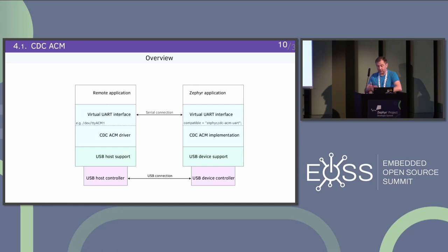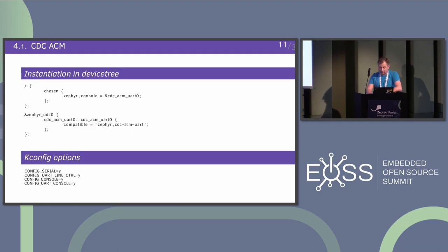To instantiate a virtual UART for your application, you just need to provide a node and compatibility. You can have approximately three virtual devices on your board, depending on how many endpoints your controller supports. For example, if your controller supports six IN endpoints, you can have three virtual devices, because for each device you need two IN endpoints: one bulk and one interrupt.